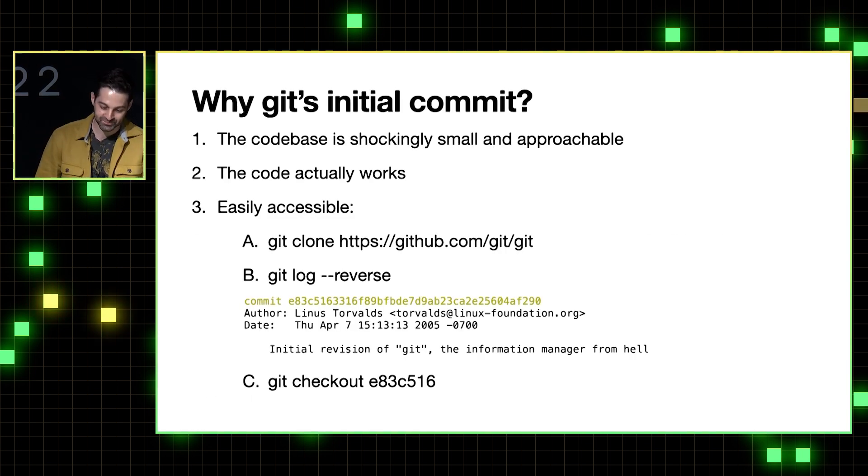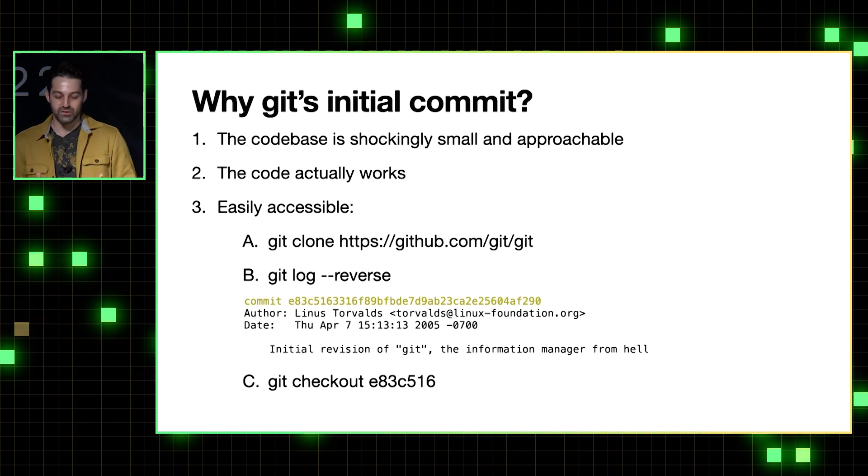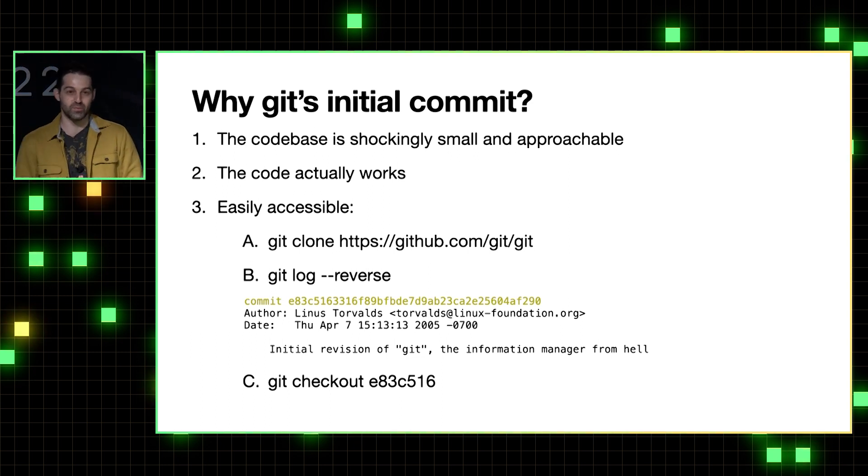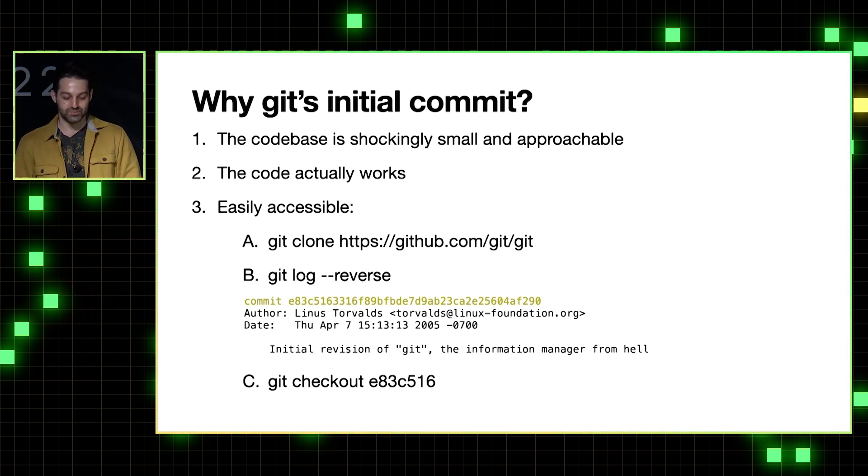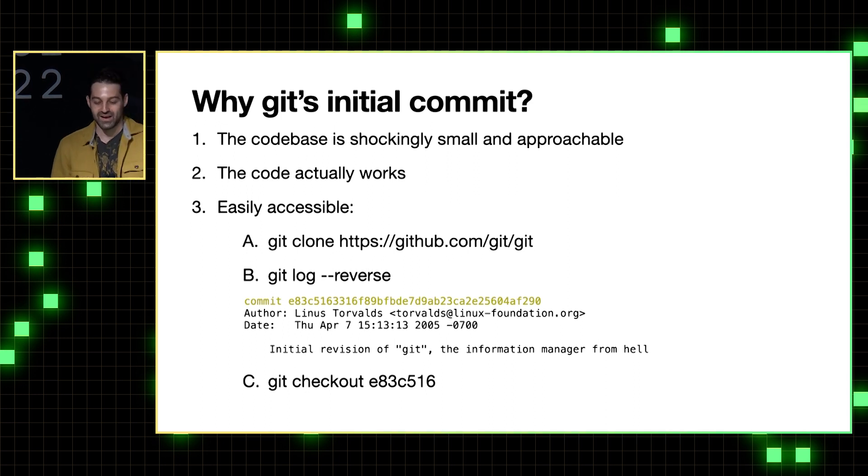But before we do, why should anyone even care about Git's initial commit? So first of all, the code base is shockingly small and approachable. The code actually works, and it's easily accessible by running a Git clone of Git source code, which you can find on GitHub here, and then running a Git log reverse to see Git's initial commit listed at the top of the log.